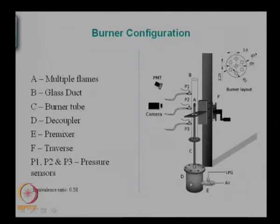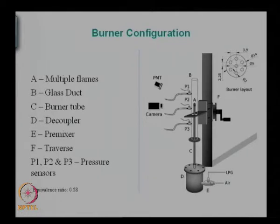All we have here is a pre-mixer — we are looking at a pre-mixed flame. We are mixing LPG and air, bringing it into a decoupler, which is like a large volume to stop fluctuations and make everything uniform. Then you send it out through this tube, there is a burner here where you can burn, and you can either have a single Bunsen burner type flame or more fancy things like multiple burners.